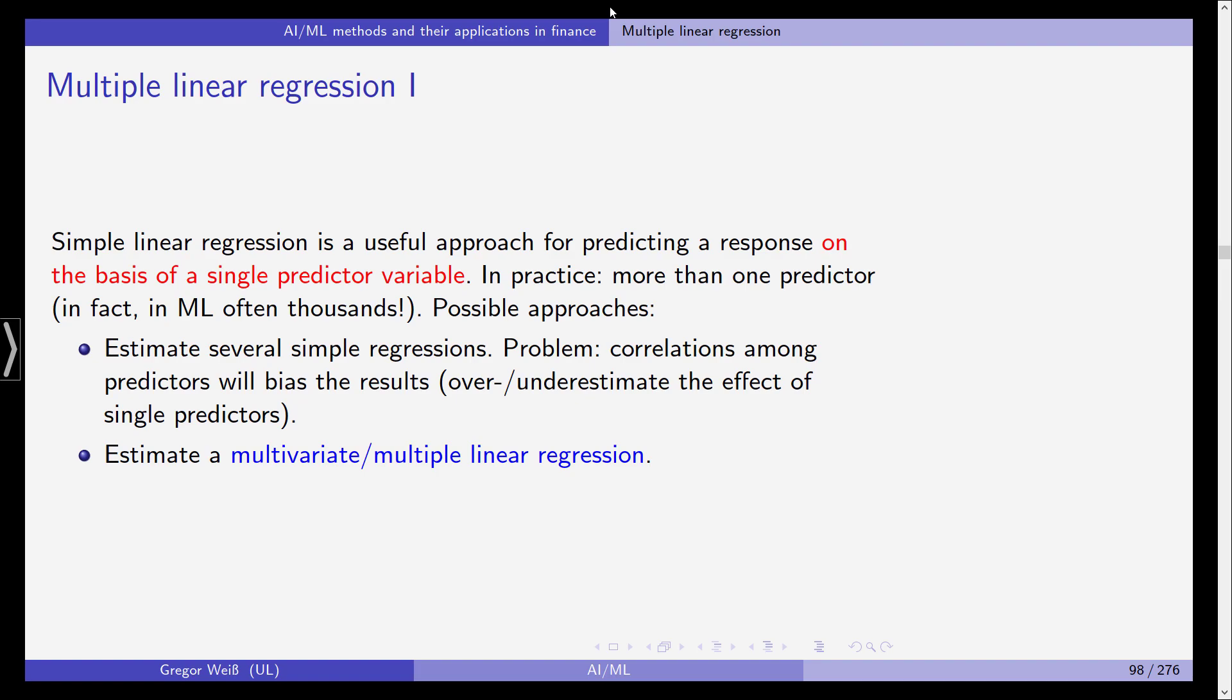Two possible approaches come to our mind. The first one is simply estimate several simple regressions. For example, if you have 10 predictors, estimate 10 simple linear regressions. The problem is that if you have correlations between those predictors, and this will almost always be the case, these correlations will bias the results in the sense that the coefficients on one predictor variable will be biased upward or downward. So we have an over or underestimation of the effect of one single predictor because this might simply be due to correlation with a different predictor. The second alternative is much better: estimating a multivariate or multiple linear regression.